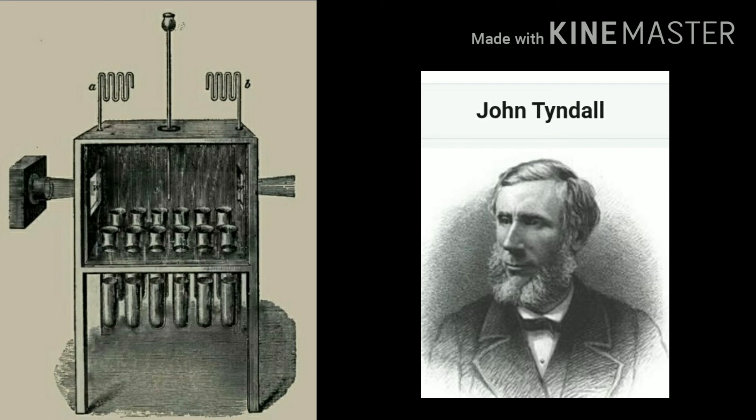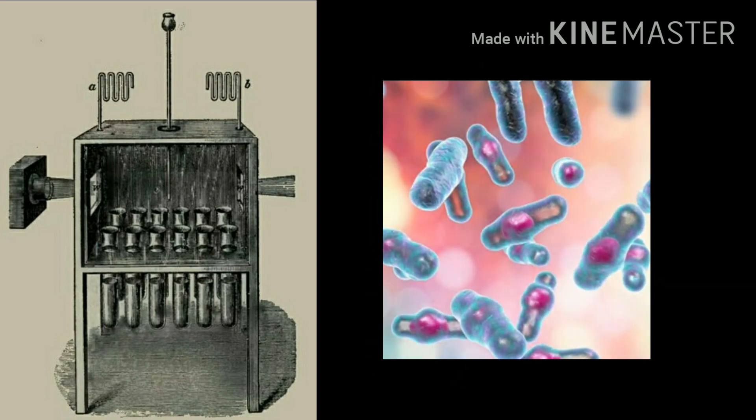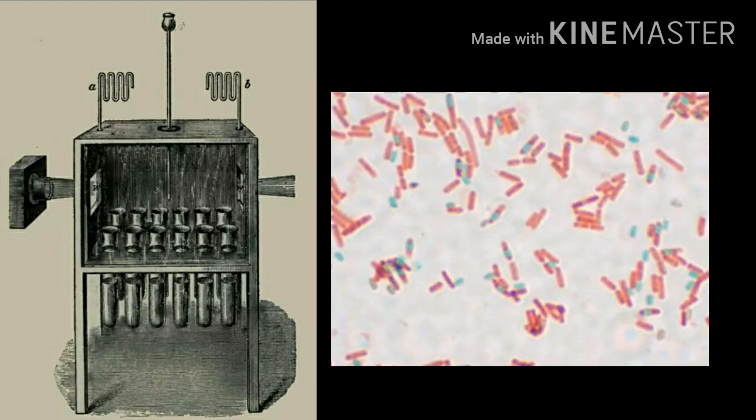Some of his heat-sterilized broths kept in the Tyndall's germ box rotted in the optically pure air. From these broths, Tyndall was led to find viable bacterial spores. All bacteria are killed by simple boiling except that bacteria have a spore form that can survive boiling.